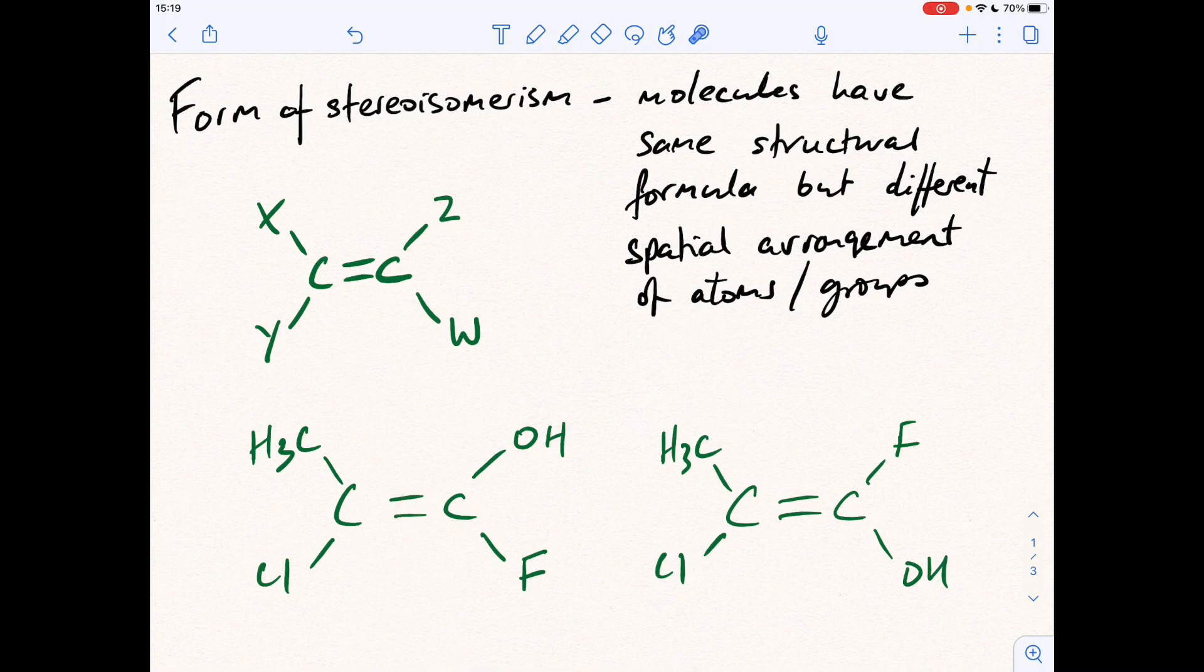So you can see that because the double bond can't rotate, let's just focus on the CH3 group. So on the same side of the double bond, you've got that OH group locked up there, whereas on this one, locked up there is the fluorine. So these are actually different spatial arrangements. The structural formula is the same because the structural formula of this would be CH3CClCOHF. And this would be CH3CClCOHF. But it's the spatial arrangement that's different.